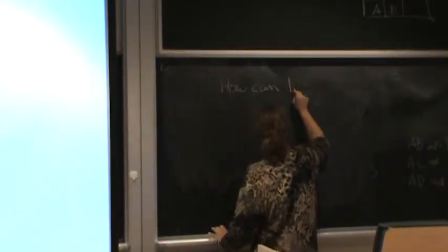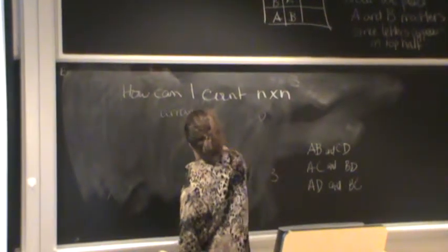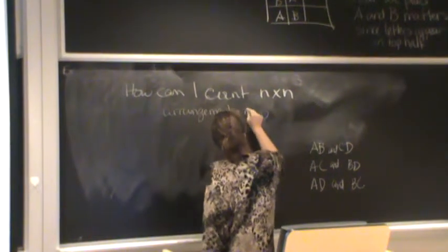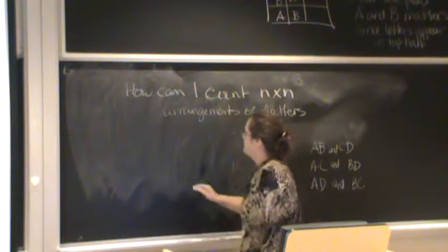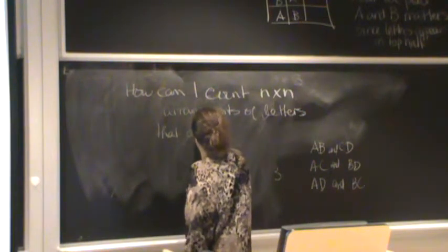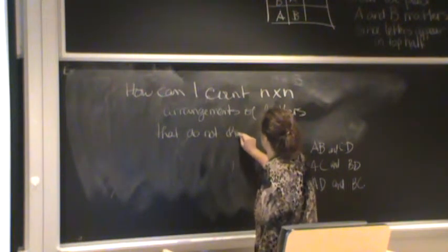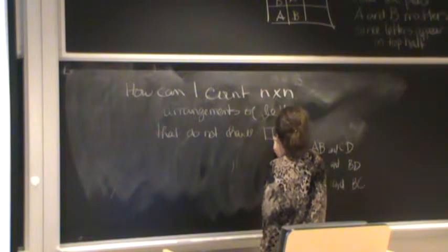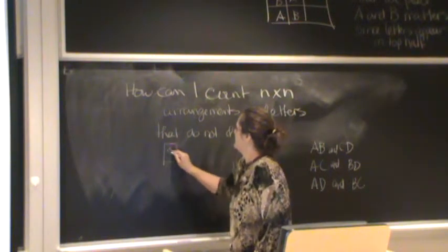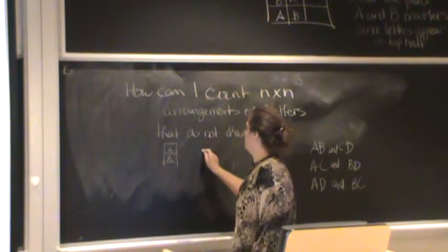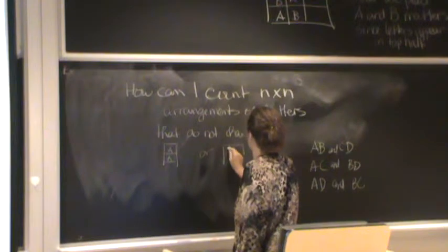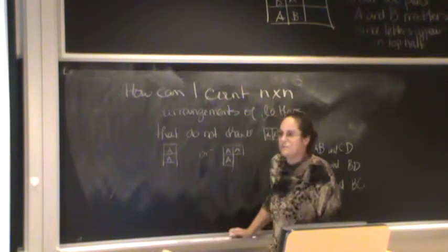So it comes down to how can I count N-by-N arrangements of letters that do not have a block like this, a block like this, and these are adjacent. I don't mean anything between it. It doesn't mean that would be A, it could be B, C, D, anywhere in its arrangement, this thing. I need to be able to count them.